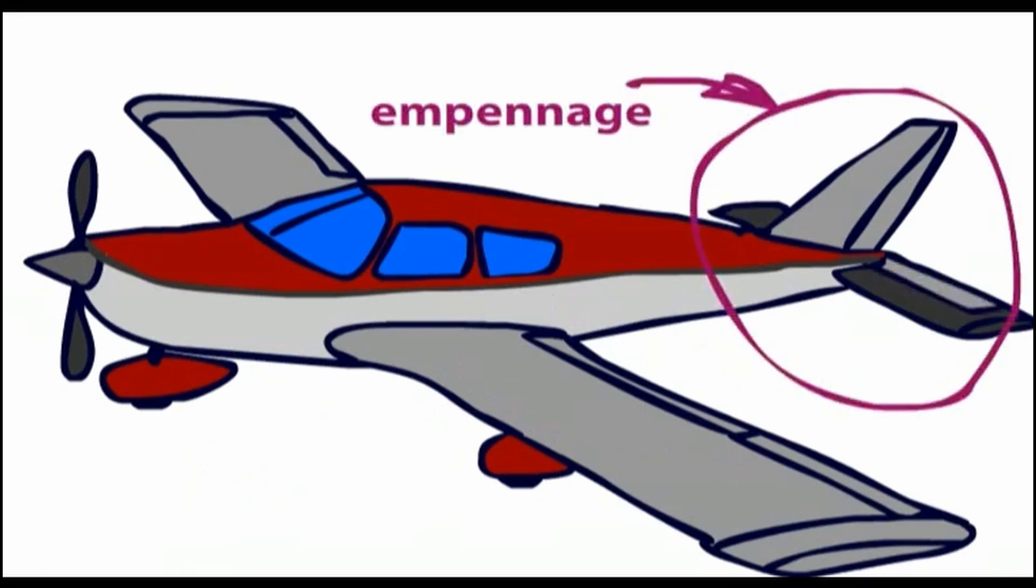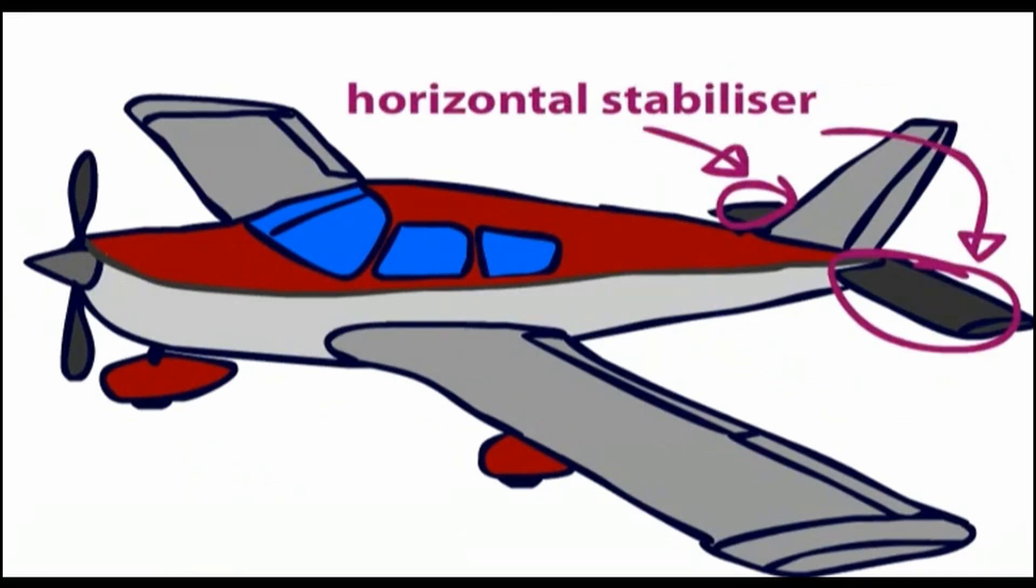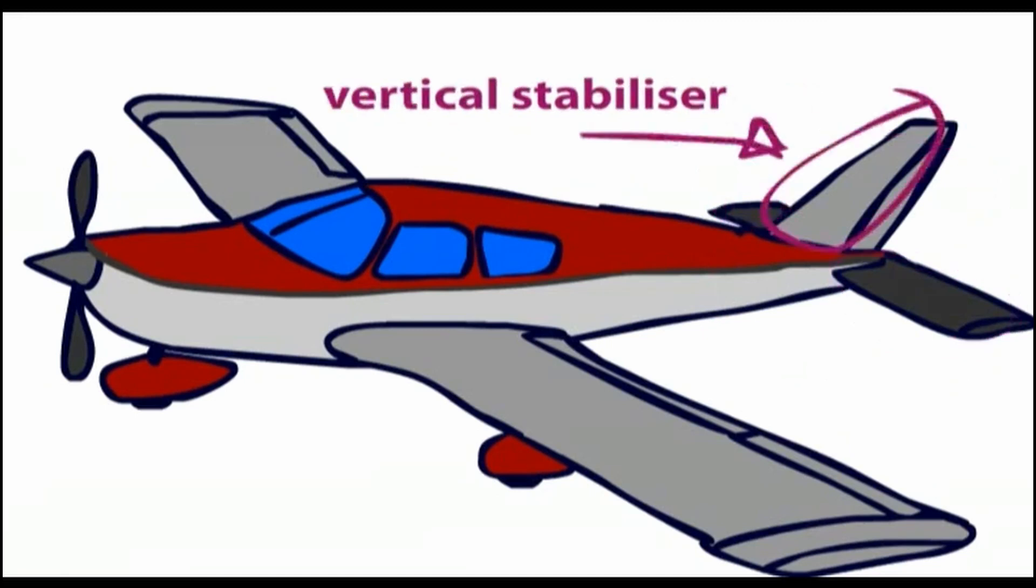To the empennage now. What thrill. The empennage is made up of the horizontal stabilizer and the vertical stabilizer. Again, a thrilling installment awaits you in a later video regarding these, however, for the time being I will say that they help to keep the aircraft in control. If you did not have them, vomit churning madly around the cabin would be the least of your concerns, as you plunge towards the ground in a wildly twisting fashion.